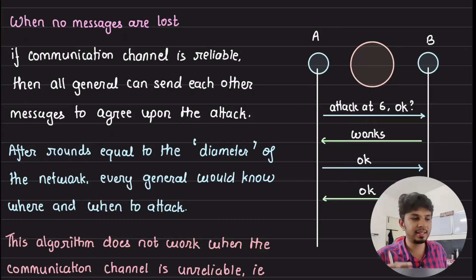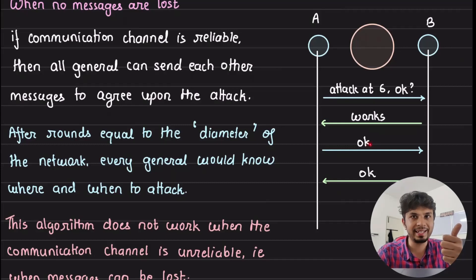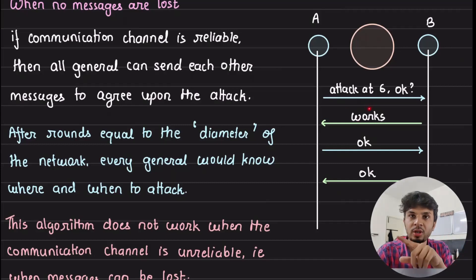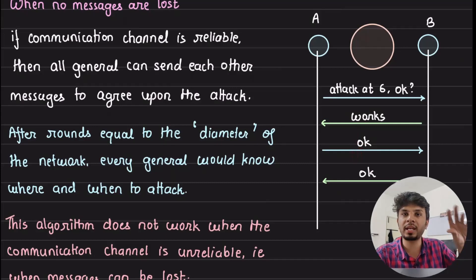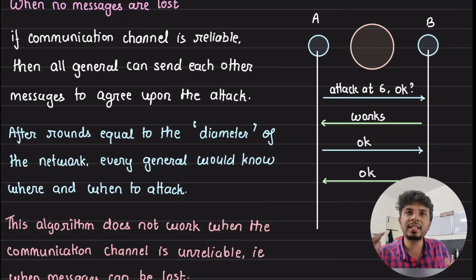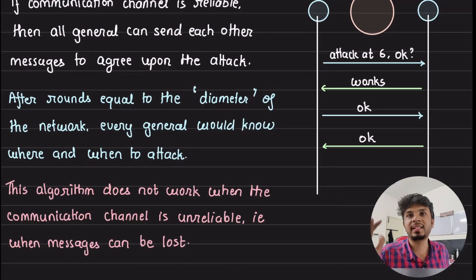This is extremely simple and consistent because no messages were lost. Both knew that A proposed a timing, B said it works, A acknowledged, B confirmed. Because A is asking B — not commanding — we need four steps to build this consensus: A proposes, B accepts, A acknowledges, B confirms. Extended to an N-generals problem, you can continue this and eventually form consensus in your distributed network, purely because the communication channel is reliable.